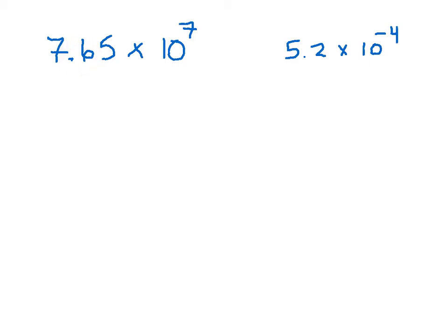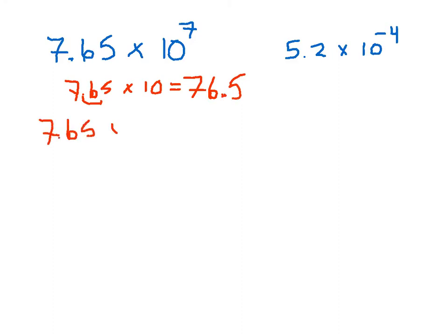So how would you change 7.65 × 10^7 into standard notation? If you had 7.65 and multiplied it by just 10, that moves the decimal point 1 to the right, giving 76.5. If you multiplied 7.65 by 10 squared, you'd move the decimal point 2 to the right, giving 765. Every time you multiply by a power of 10, you move the decimal point to the right. We're going to do that 7 times.